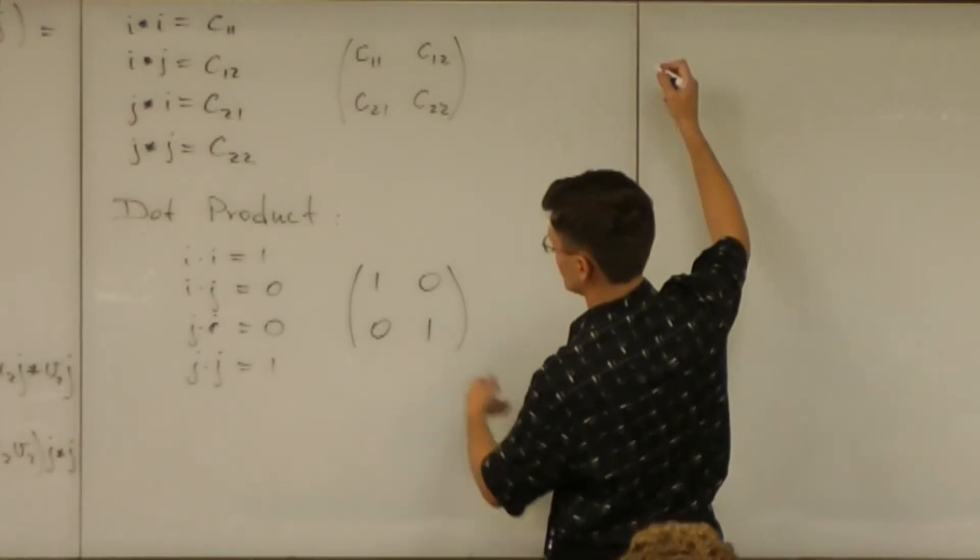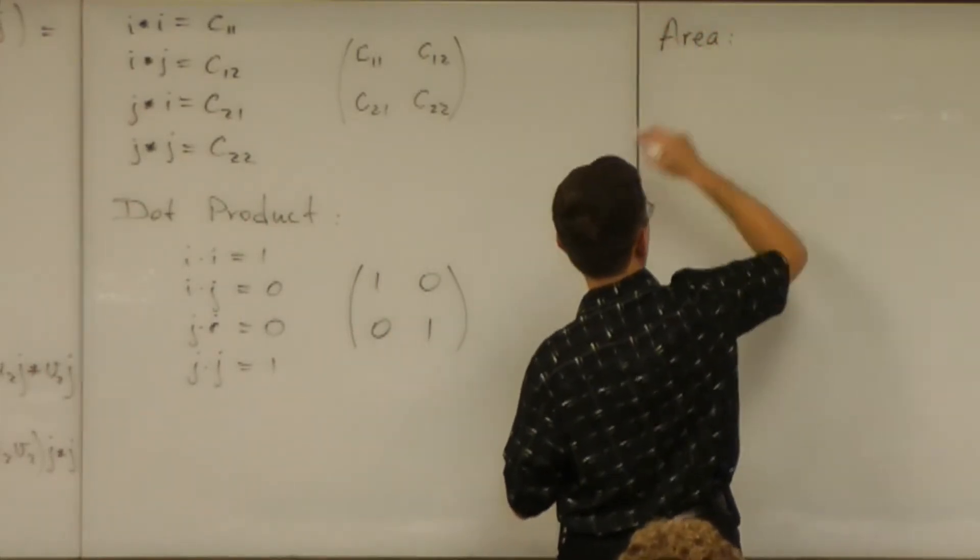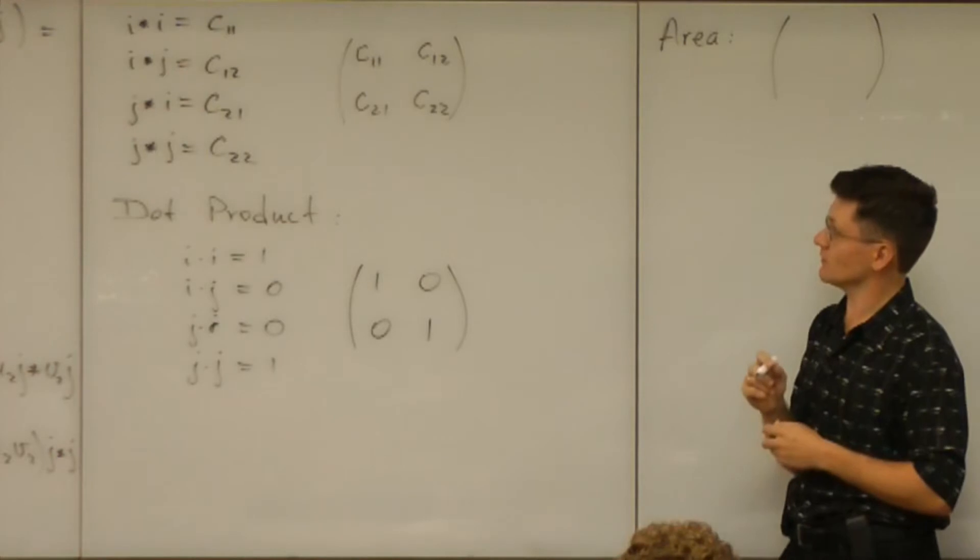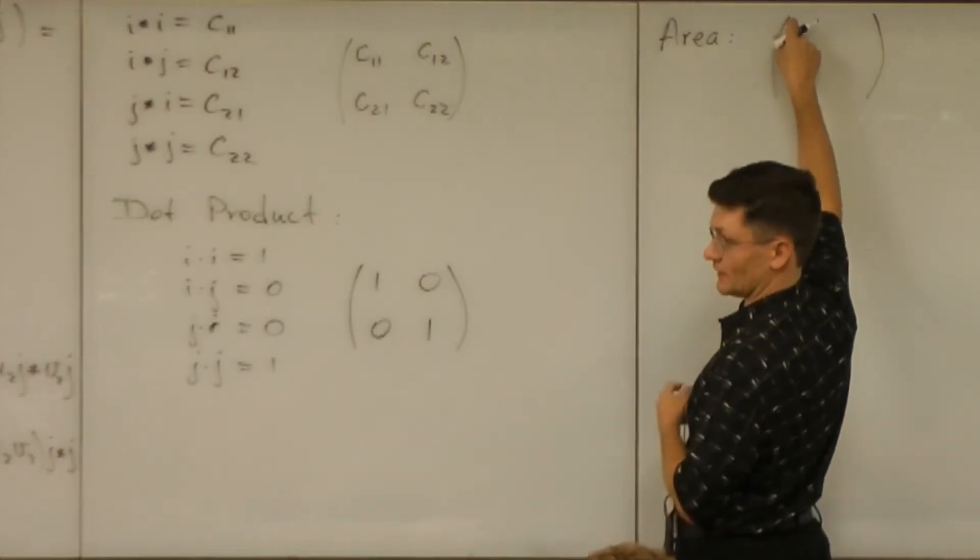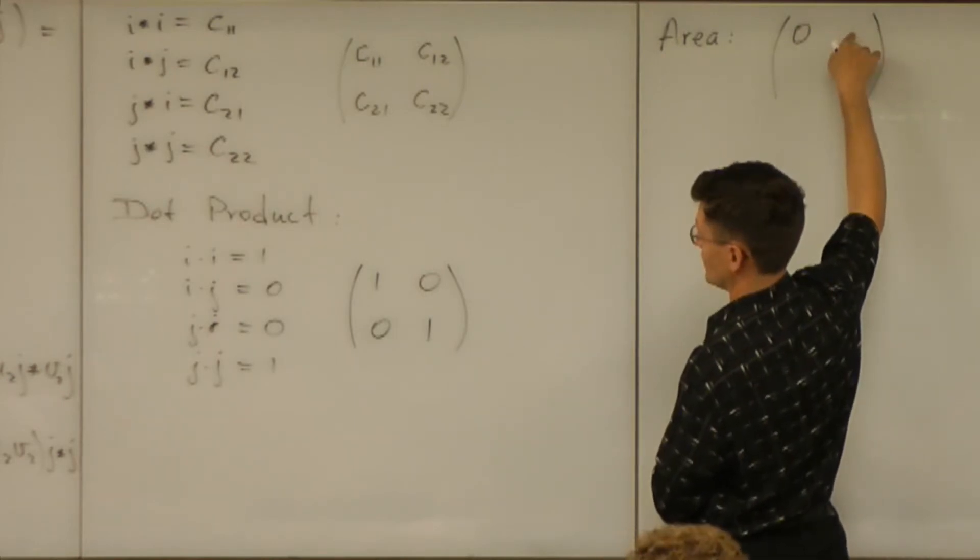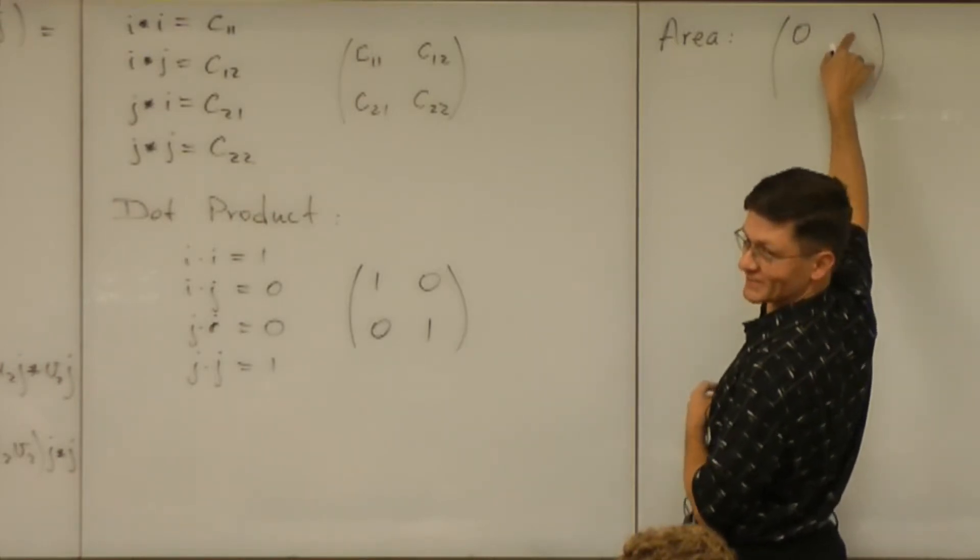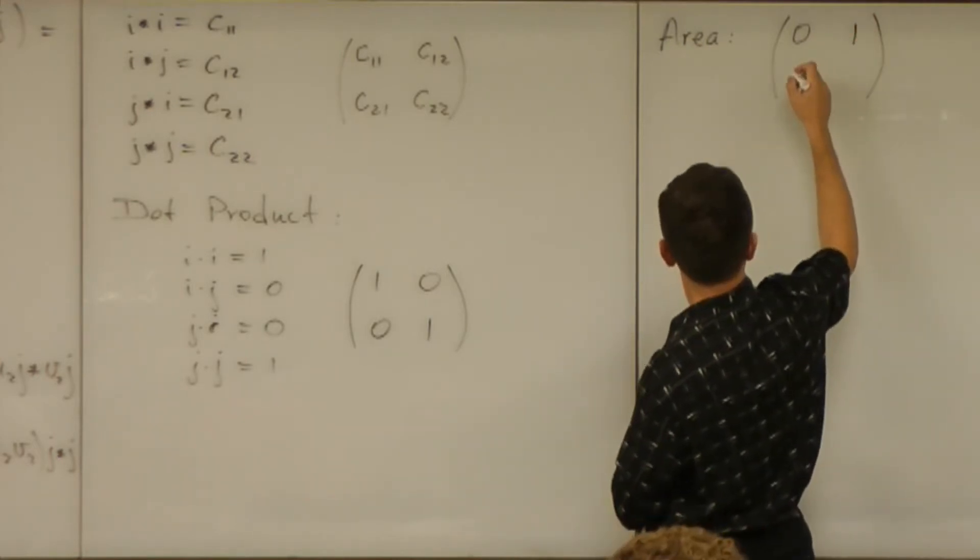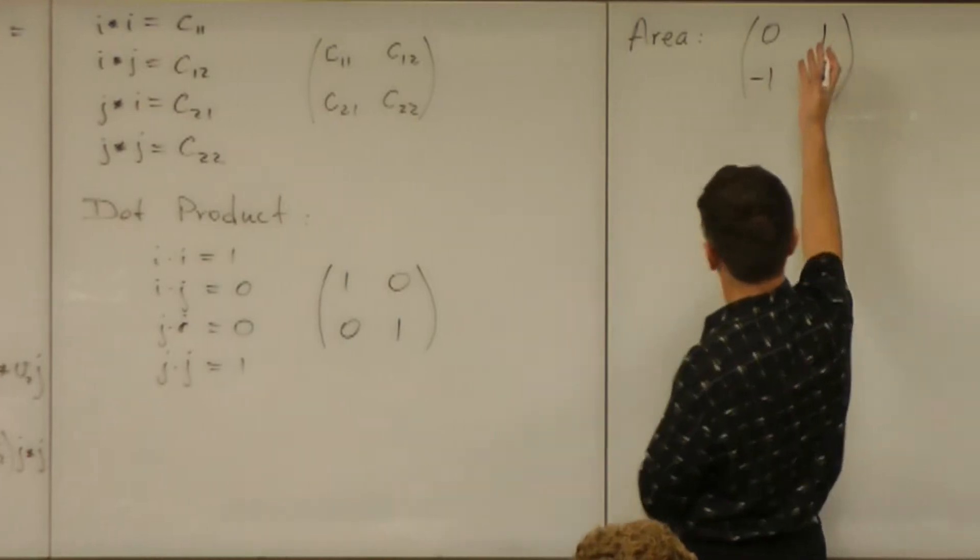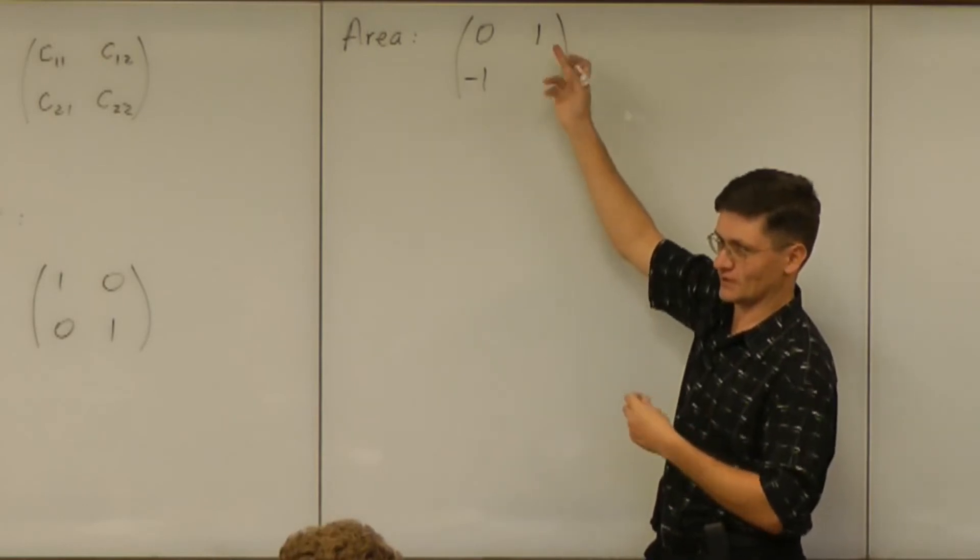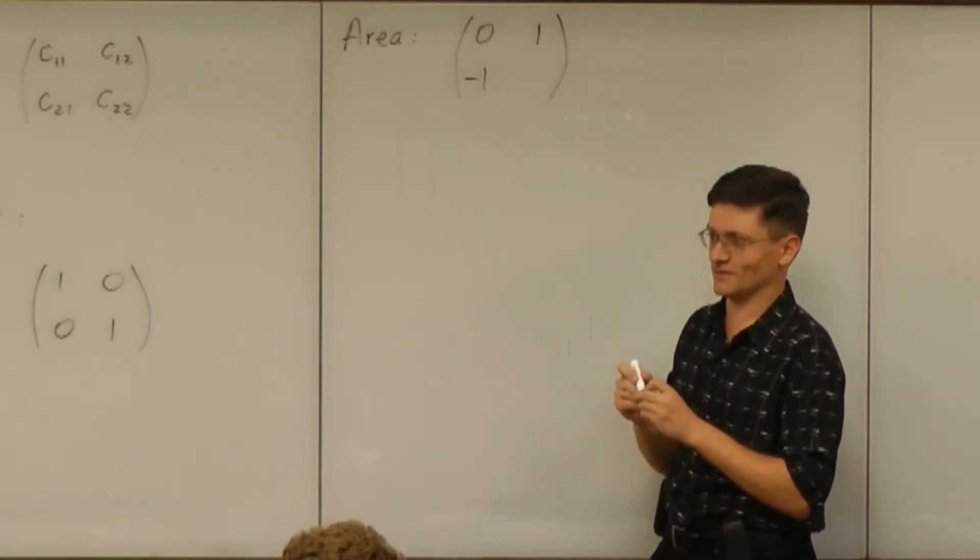Now, let's look at the area. Let's go ahead and figure out what the matrix is. What's the area product of i and i? Zero. What about i and j? Is it one? All right. What about j and i? One or negative one? Negative one. If it's anything, it's negative. If one is negative, well, if this is one, then this is negative one. Or vice versa.